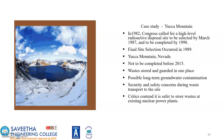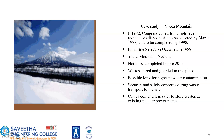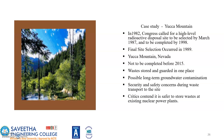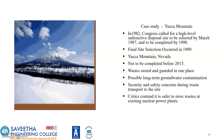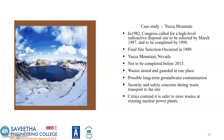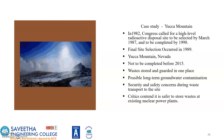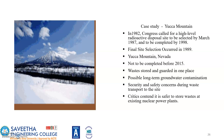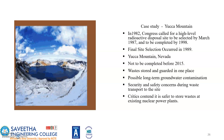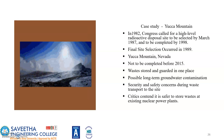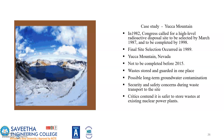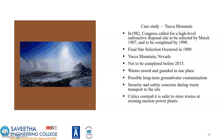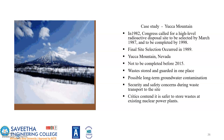The case study of Yucca Mountain: the 1982 Congress called for a high-level radioactive disposal site, to be completed by 1998. Final site selection occurred in 1989, but Yucca Mountain was not expected to be completed before 2015. Waste was to be stored in one place, raising concern about possible long-term groundwater contamination. Critics argued it is safer to store waste at existing nuclear power plants.